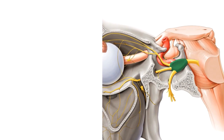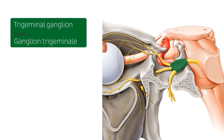Now let's have a closer look at this structure here, which you now see highlighted in green. This is known as the trigeminal ganglion. The trigeminal ganglion is a group of cell bodies and is located within this cavity right here that I'm showing you.